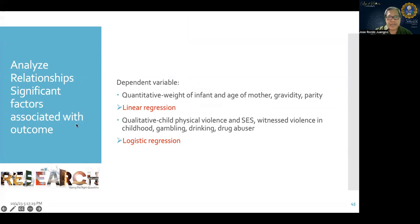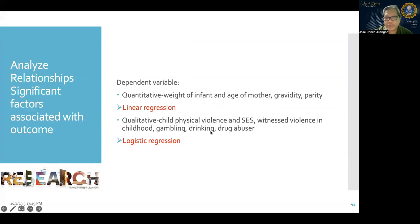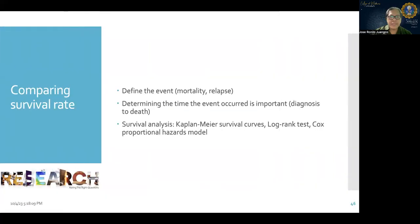If you want to analyze the relationship of significant factors associated with the outcome, use linear regression or logistic regression — do not interchange these. If your dependent variable is quantitative — such as weight, age, or parity — use linear regression. If your dependent variable is qualitative — such as gender, drug abuse, or yes/no responses — use logistic regression. If you want to compare survival rates, you can use survival analysis, Kaplan-Meier survival curves, log-rank test, or Cox proportional hazards model.